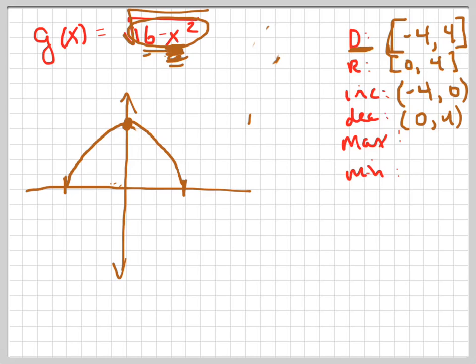Or is it 4, too? Say that again? Wait. Oh yeah, it's 4 because when you put 0 in, you get 4. Yeah, when you put 0 in, you'll get 4.